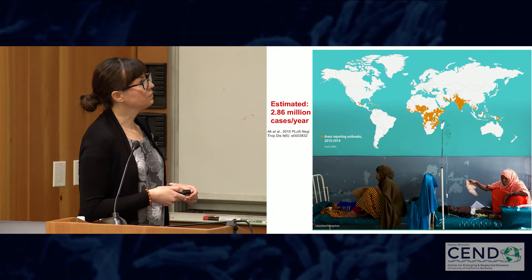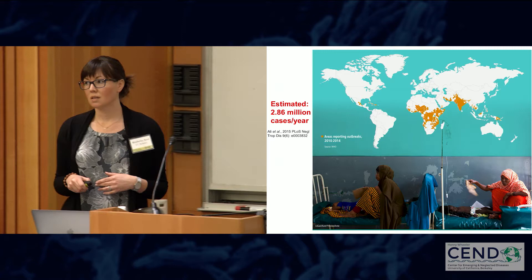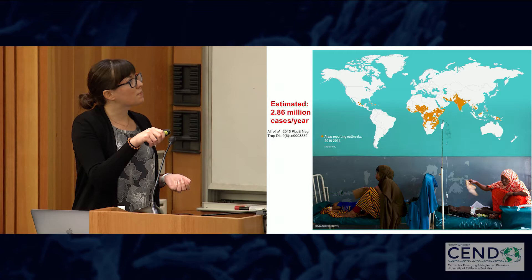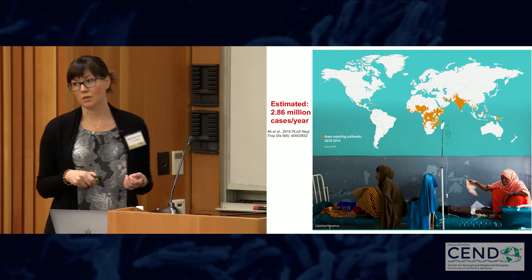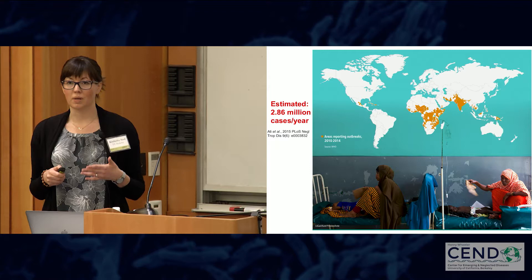In terms of the global burden of cholera, it's currently estimated that there are approximately 3 million cases per year, based on a paper published in 2015. Not surprisingly, being a waterborne disease, cholera is prevalent in many parts of the world where access to clean drinking water and proper sanitation is lacking — including many parts of Africa and Asia, as well as Mexico and Haiti. This represents approximately 10% of the actual burden; around 250,000 cases are reported to the WHO.